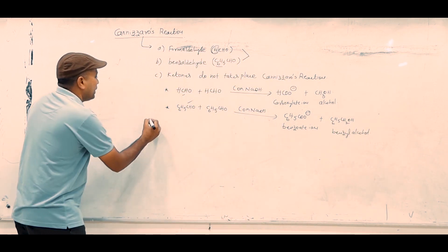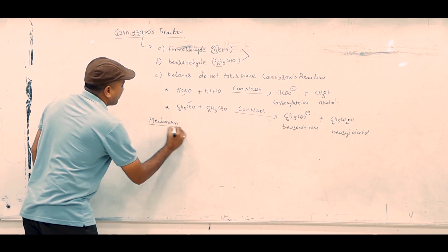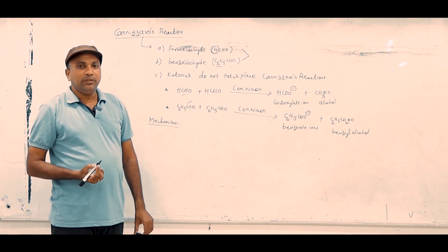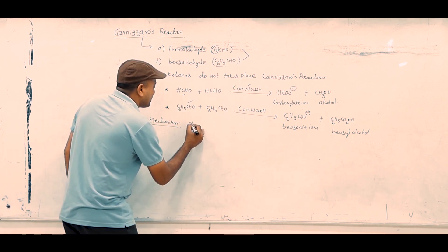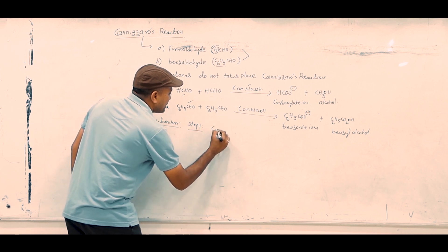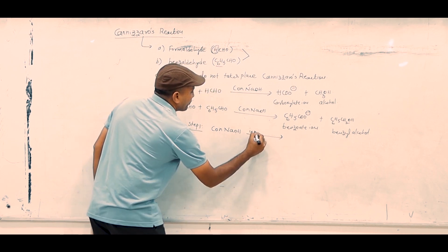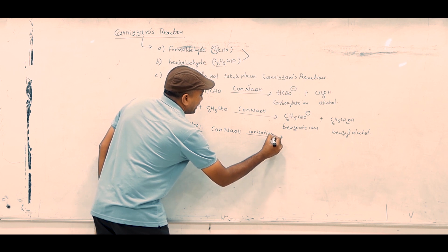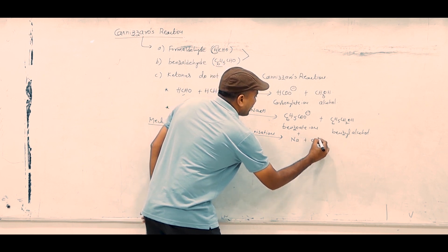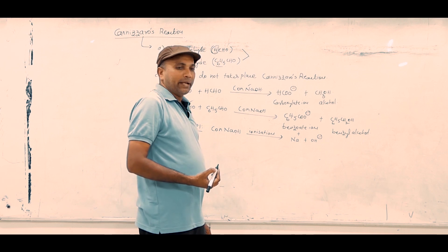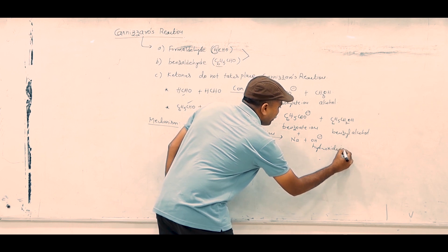Now, the mechanism of Cannizzaro's reaction. In step 1, the concentrated NaOH ionizes to produce Na⁺ and a hydroxide ion (OH⁻).